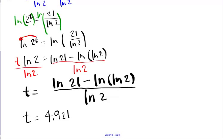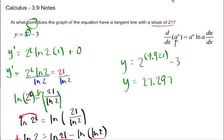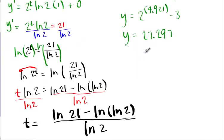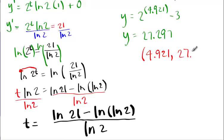So if I know that t is equal to 4.921, how do I find y? I just plug 4.921 in right here. And when you get done punching this guy into your calculator, you get y equals 27.297. And so at what point does this occur where you have a slope of 21? It occurs at the point, and then look back down here, 4.921 and 27.297.